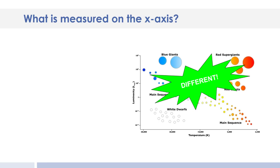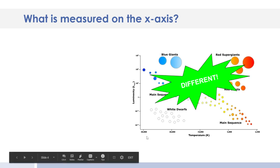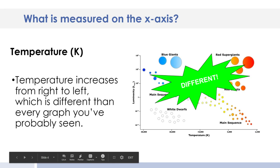Now something that's very different about that x-axis, maybe you noticed it, is the higher numbers are over here on the left, and the lower numbers are over here on the right. So temperature increases from right to left, and that's different than probably any other graph you've ever seen.